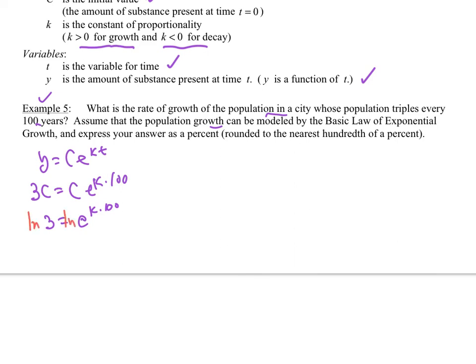Ln both sides. And so 100k = ln 3. So k = ln 3 divided by 100. There's my constant of proportionality. Punch that into your calculator.